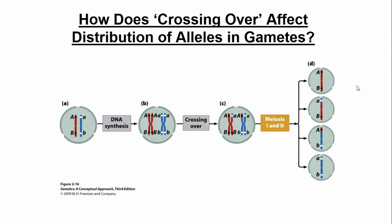This slide shows what happens during crossing over with linked genes — genes on the same chromosome. Gene A and gene B are linked, so normally big A and big B stay together producing one gamete, and little a and little b stay together producing another. With completely linked genes you lose some genetic diversity since you're not getting independent assortment. However, if crossing over occurs, you get recombinant gametes — the middle two combinations of big A with little b, and little a with big B. The outer two are called parental or non-recombinant gametes.